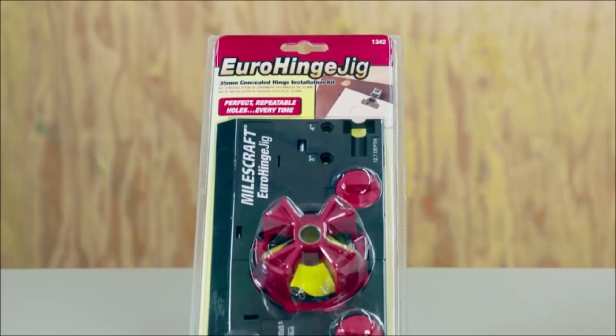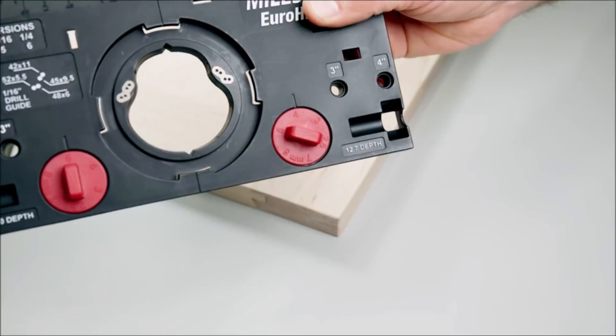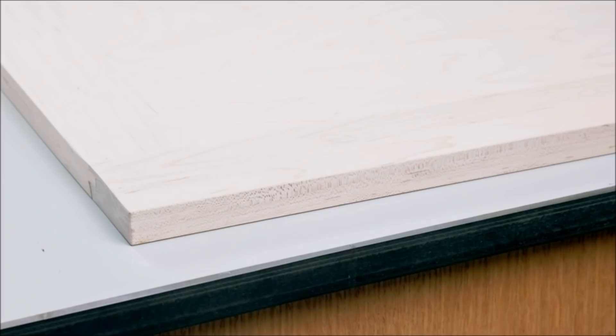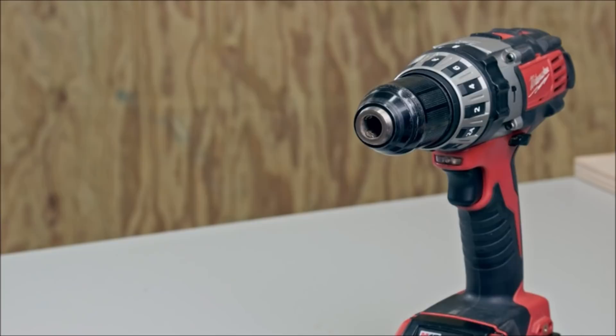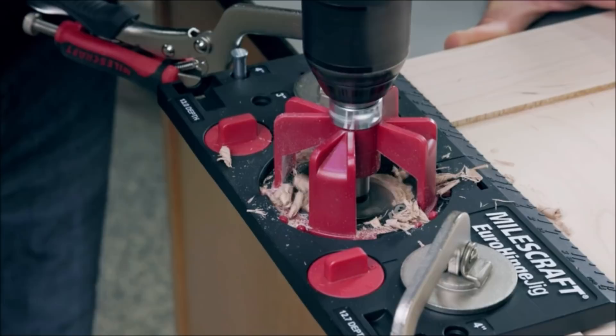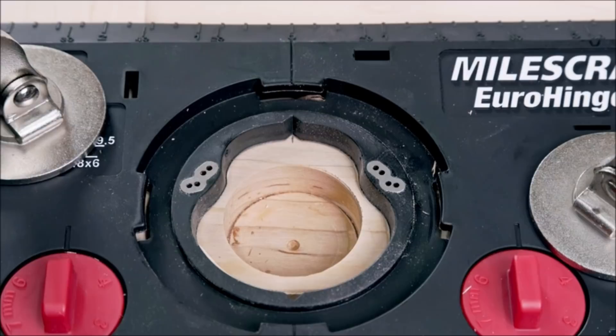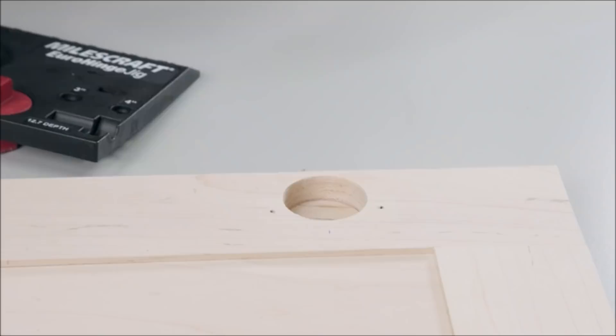My scrap Euro hinge jig. These jigs have screwed and installed perfect 35 millimeter concealed hinges on your cabinet door projects. Perfect repeatable holes every time on both frame and frameless cabinets. The jig aligns to six common cup hole edge distance settings and an edge locator pin quickly sets cup hole vertical position at three inch or four inch. The metal bushing drill guide provides accurate, repeatable drilling that does not clear door.